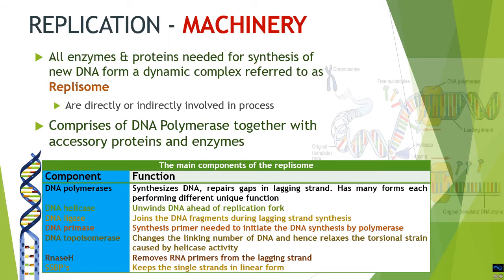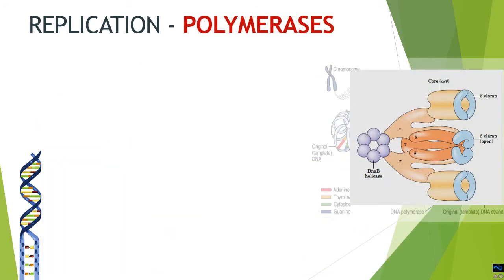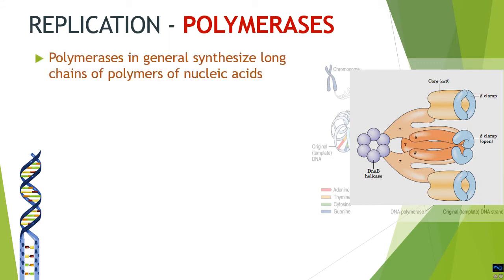Primary among replisome components are the polymerases. Polymerases are enzymes capable of synthesizing long chains of nucleic acid polymers. Since nucleic acids are of two types — DNA (deoxyribonucleic acid) and RNA (ribonucleic acid) — this distinction gives rise to two different types of polymerases.